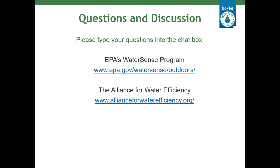Going back to Moulton-Niguel: with the NatureScape program replacing turf with native plants, is the soil amended in a way to better support native plants? The great thing about the NatureScape program and native plants in general is that they're designed for local soil. There is some site prep depending on conditions, but mostly it's using the native soils for native plants — there's not as much need to augment with other topsoil.